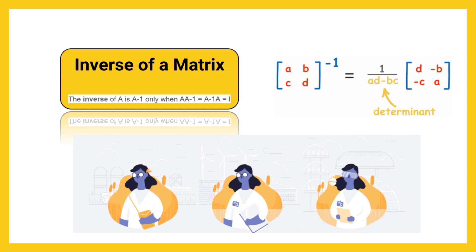then B is called the inverse of A, i.e., B equals A inverse, and A is the inverse of B.